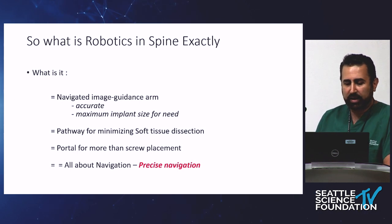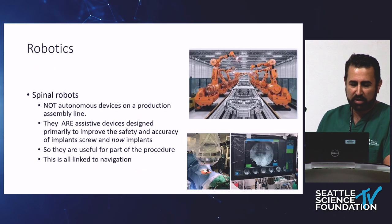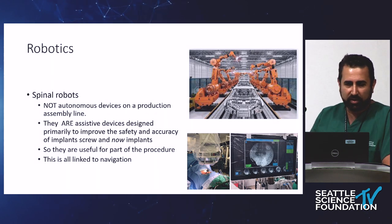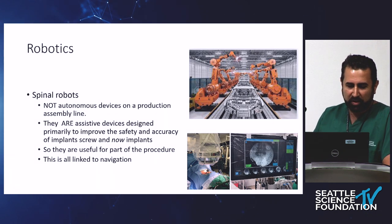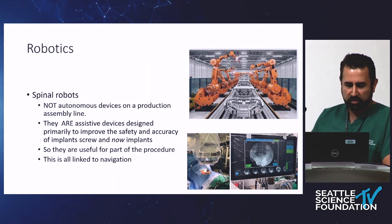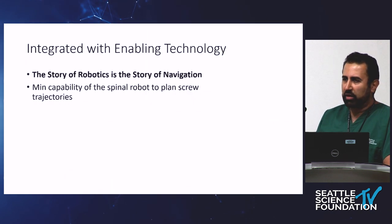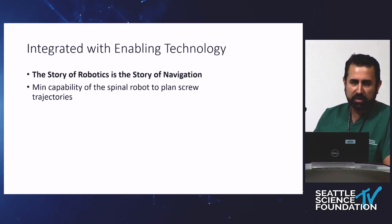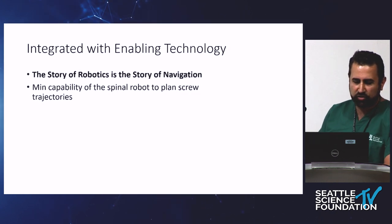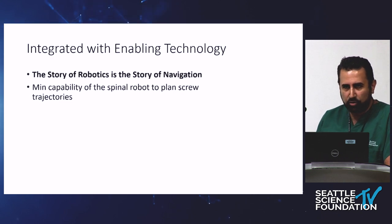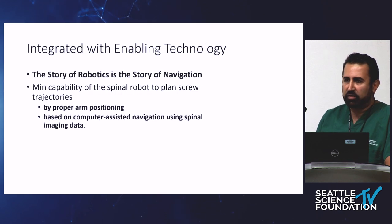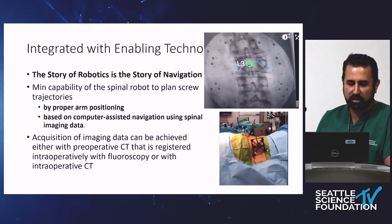It is a portal for more than screw placement, such as planning for interbody software and interbody placement. It's all about navigation — robotics is navigation, and importantly it's precise navigation. It's an assistive device that is as clever and as good as the surgeon's ability to manipulate the tool at hand. Its minimum capability is placing a screw trajectory, whether through a guided arm or K-wire, executed through computer-assisted navigation.